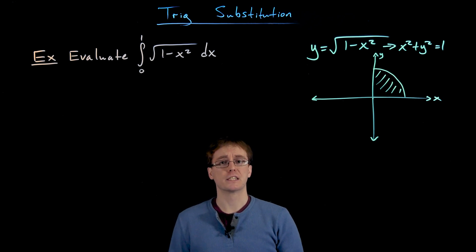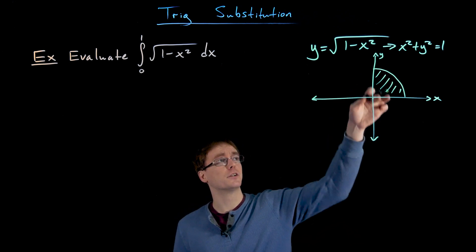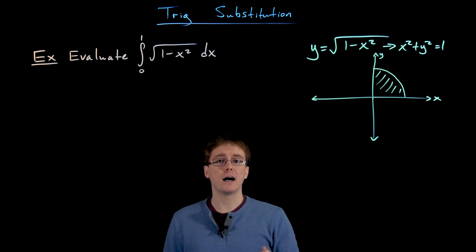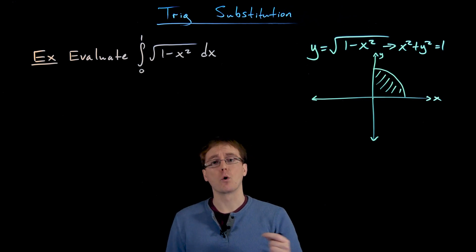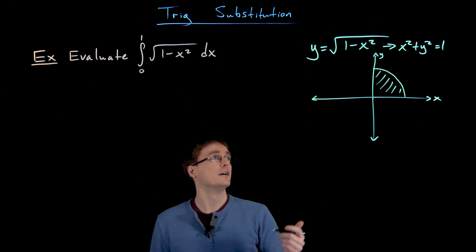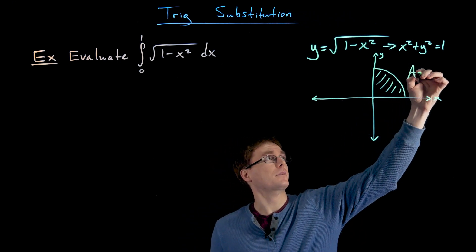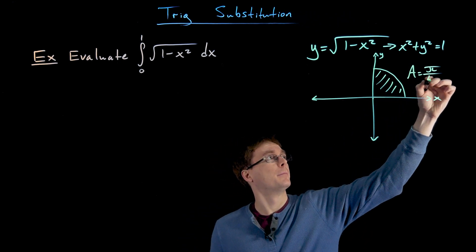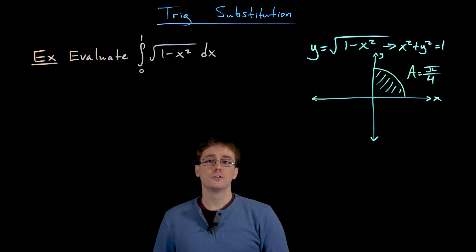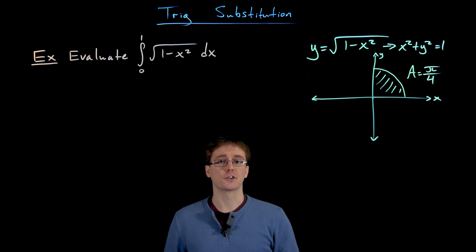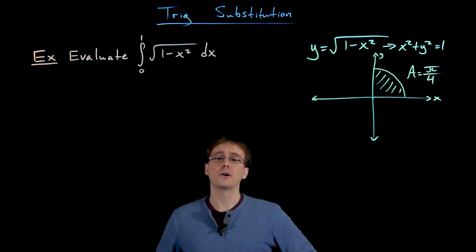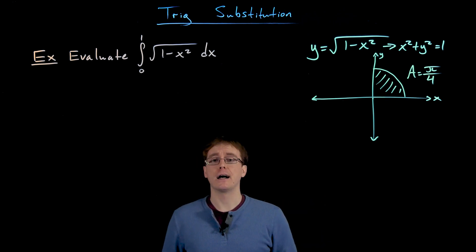The area of a circle is given by pi r squared. Our radius r here is equal to 1, so the entire unit circle has an area of pi. But we only have a quarter of our unit circle in this example, and a quarter of pi is pi over 4. So just interpreting our definite integral geometrically, we know the answer is going to be pi over 4.